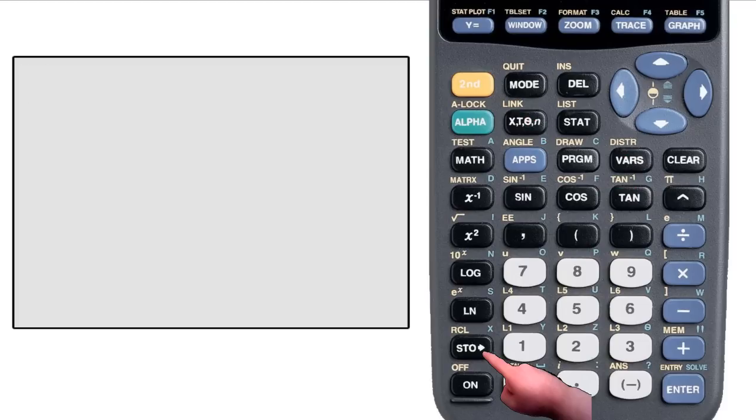The store button is above the on button and says STO with an arrow. You can store any numeric value as a letter. So let's say I want to store 5 as X.